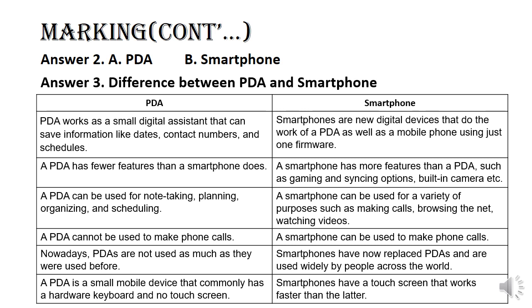Additional features of a smartphone beyond those of a PDA include a powerful camera, gaming features, and so on. A PDA can be used for note-taking, planning, organizing, and scheduling, while a smartphone can be used for a variety of purposes such as making calls, browsing the internet, and watching videos.